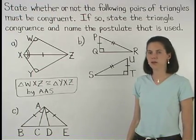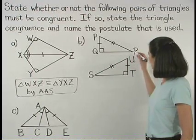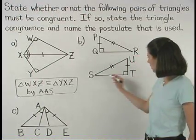Writing our congruent statement, we say that triangle PQR is congruent to triangle UTS.